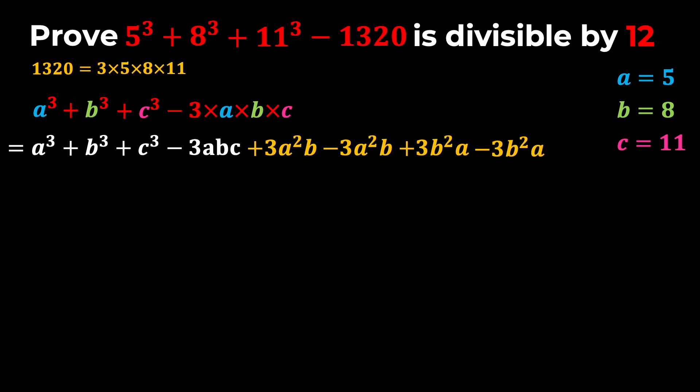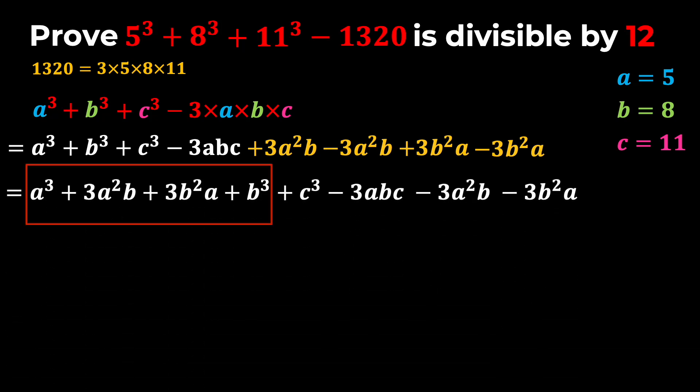Next, I will rearrange the terms in a way that I will have A cubed plus 3A squared times B plus 3B squared times A and plus B cubed and plus the rest of the expression. Now notice that I can rewrite the first four terms in the form of A plus B quantity cubed, and that's because of the binomial theorem.